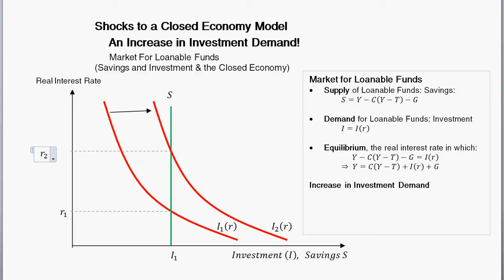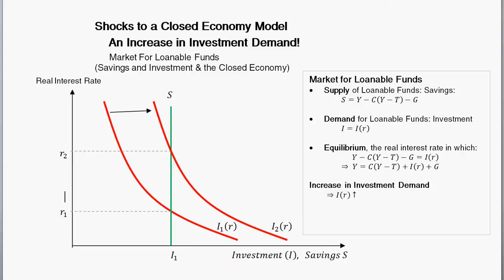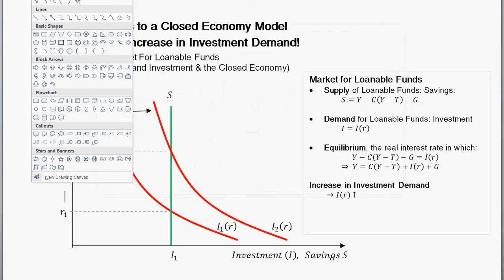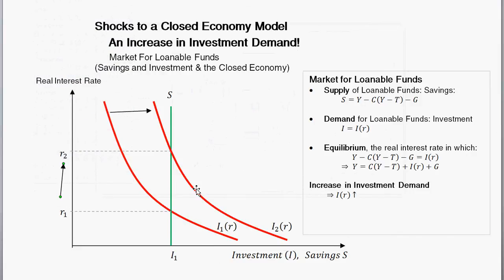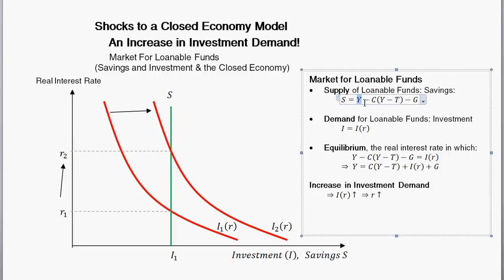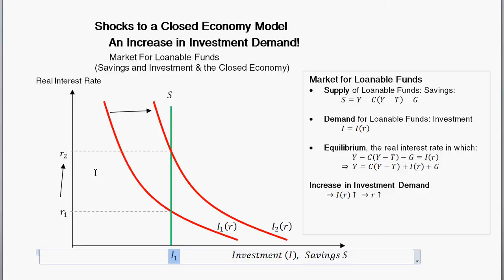The new real interest rate is R sub 2. An increase in investment demand implies the investment curve shifts out, and we see that the real interest rate increases from R1 to R2. In this simple setup, given the assumptions of the model, national savings is still fixed. National savings is just a function of output Y, which is fixed because there's fixed capital and labor, fixed consumption, and fixed government spending. None of those things change, so we have this straight vertical line. So investment hasn't changed at all, but the real interest rate changed.